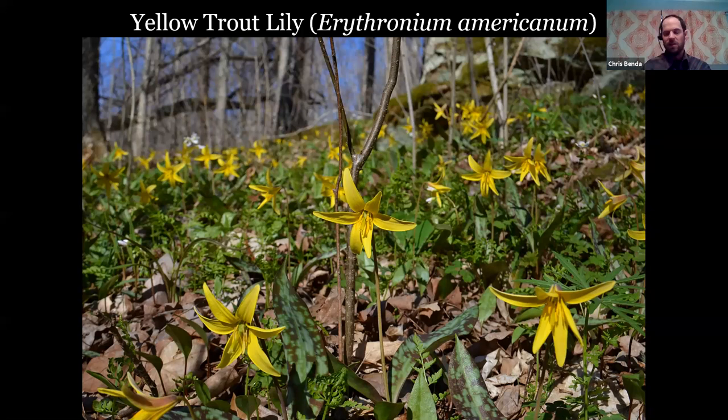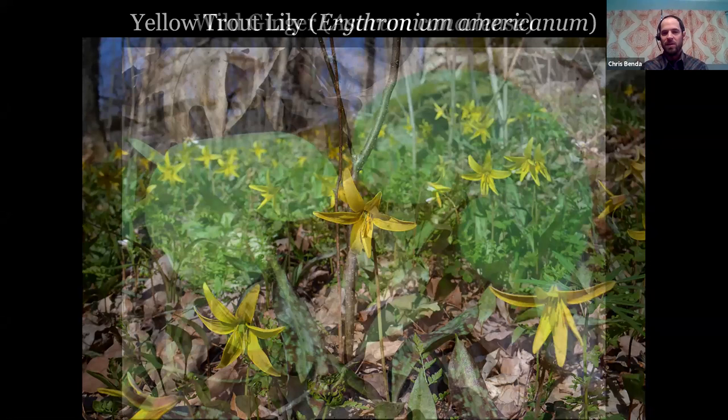You'll sometimes see a hillside or boulders just covered with a single leaf per plant, none of them blooming — basically juveniles too young to bloom. When they do bloom, they produce two leaves. So you'll always see two leaves for a blooming trout lily, and just one if it's immature.